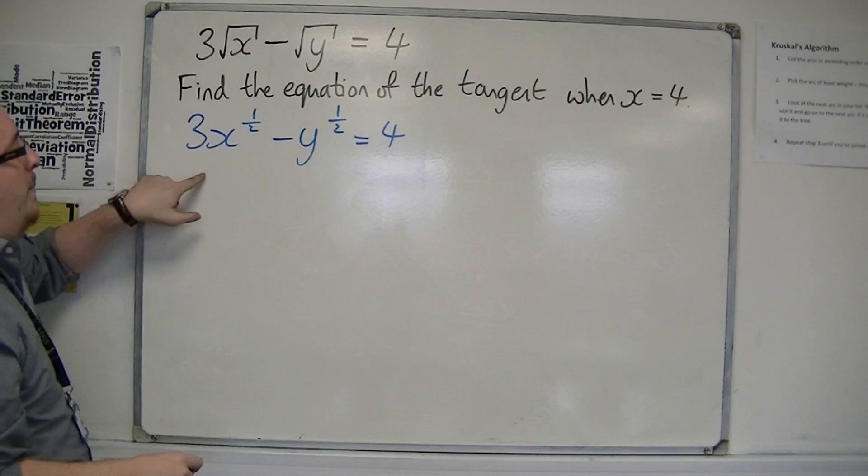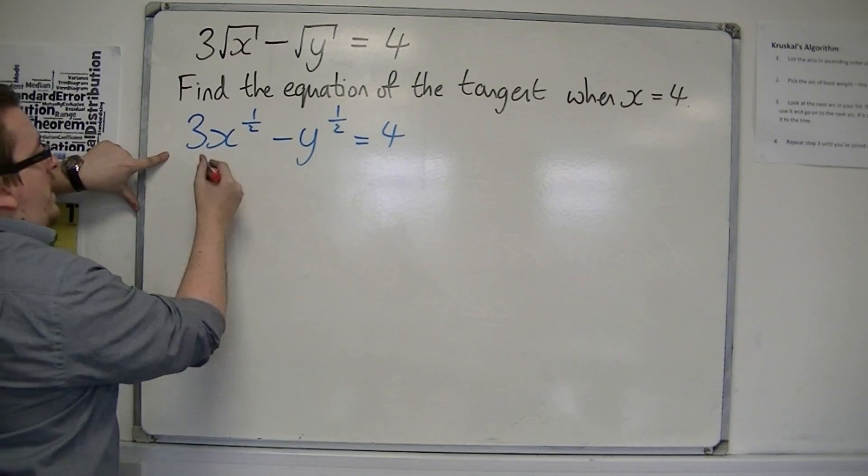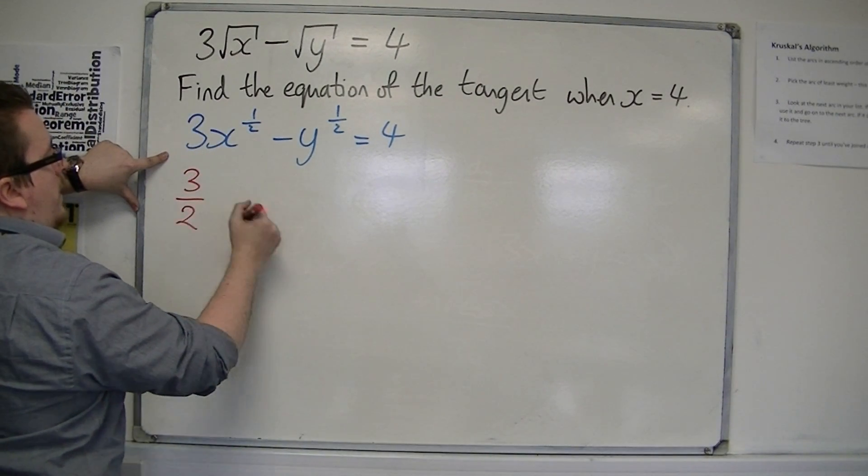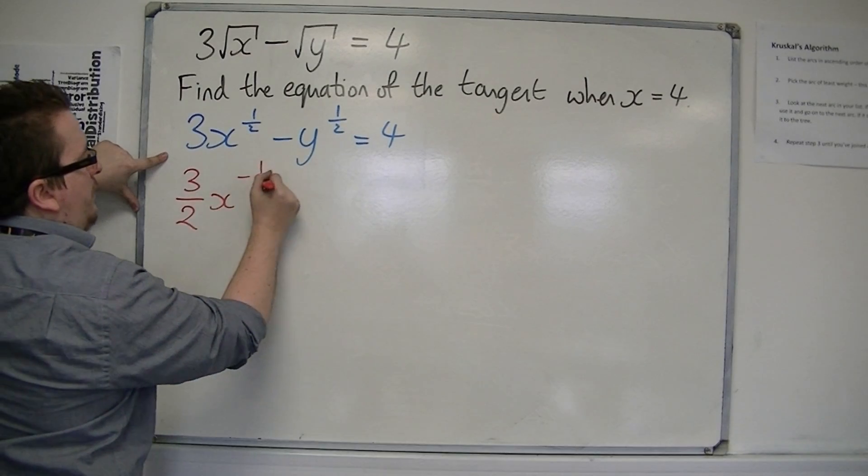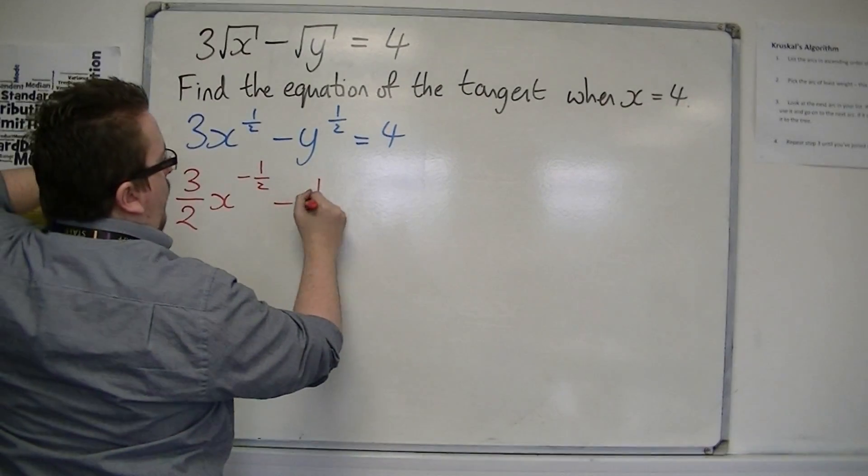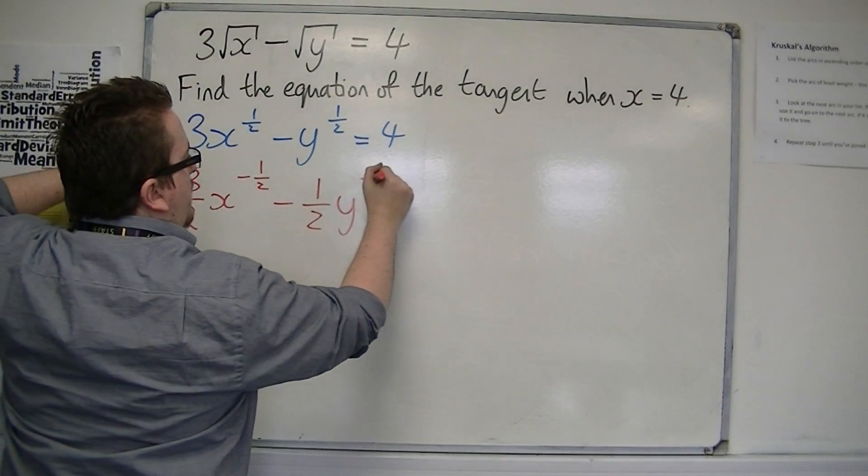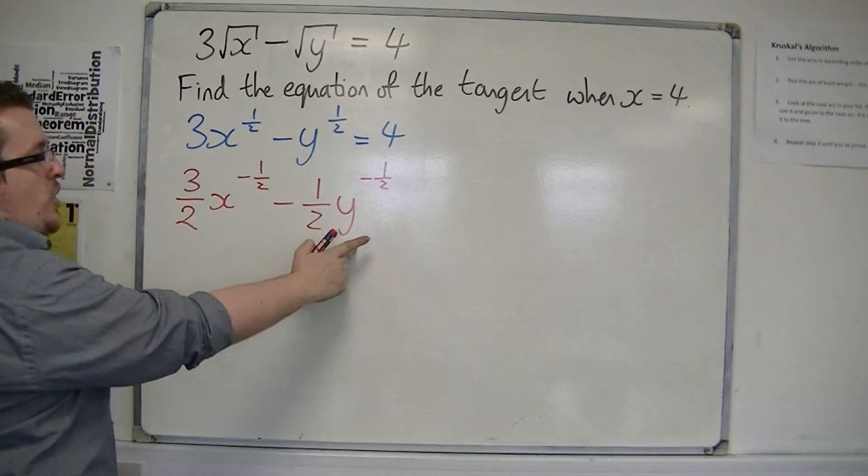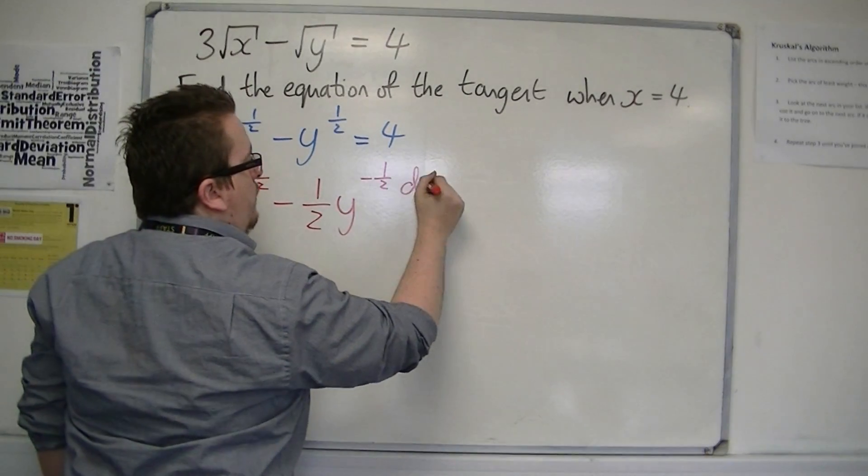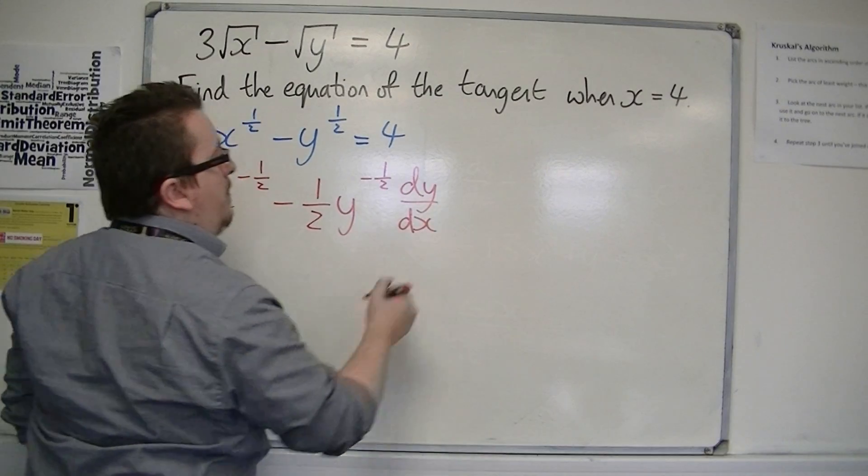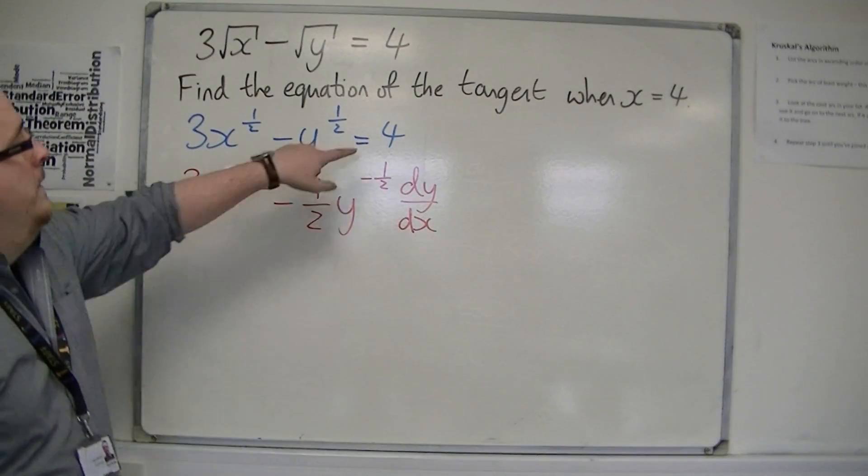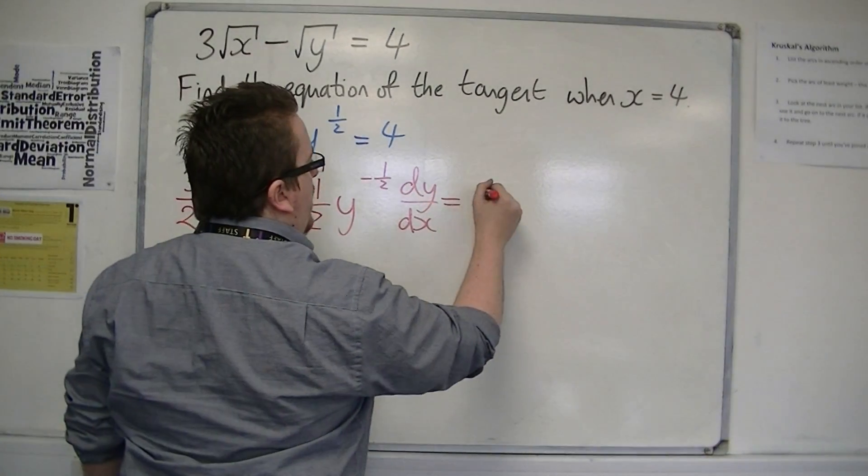Now we can differentiate it with respect to x. So we can bring the half down, so we've got 3 halves, x to the minus 1 half, take away 1 half, y to the minus 1 half, but when we differentiate y with respect to x, we have dy by dx that appears on the right hand side. The 4 will differentiate to 0.